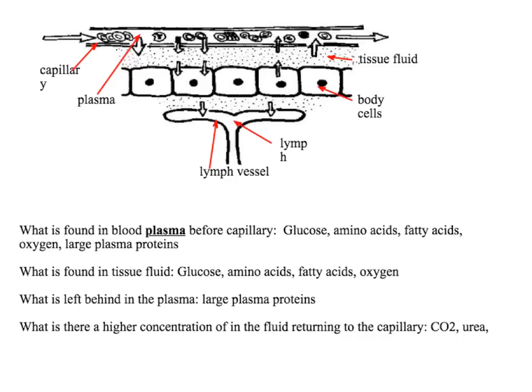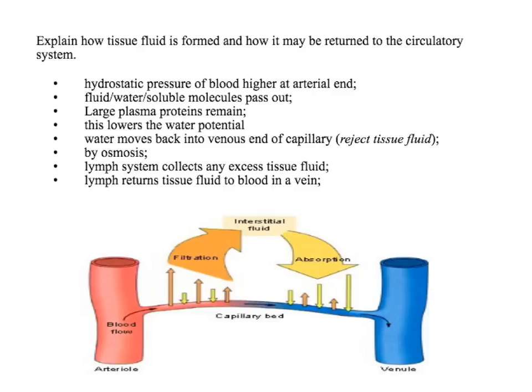You might get asked: what is there a higher concentration of returning to the capillary at the venule end? There would be a higher concentration of carbon dioxide and urea — your waste products — with more of them returning to the capillary at the end of the capillary bed, which then gets taken around the body to be excreted. This is a classic long-answer question about how tissue fluid is formed and returned to the circulatory system.